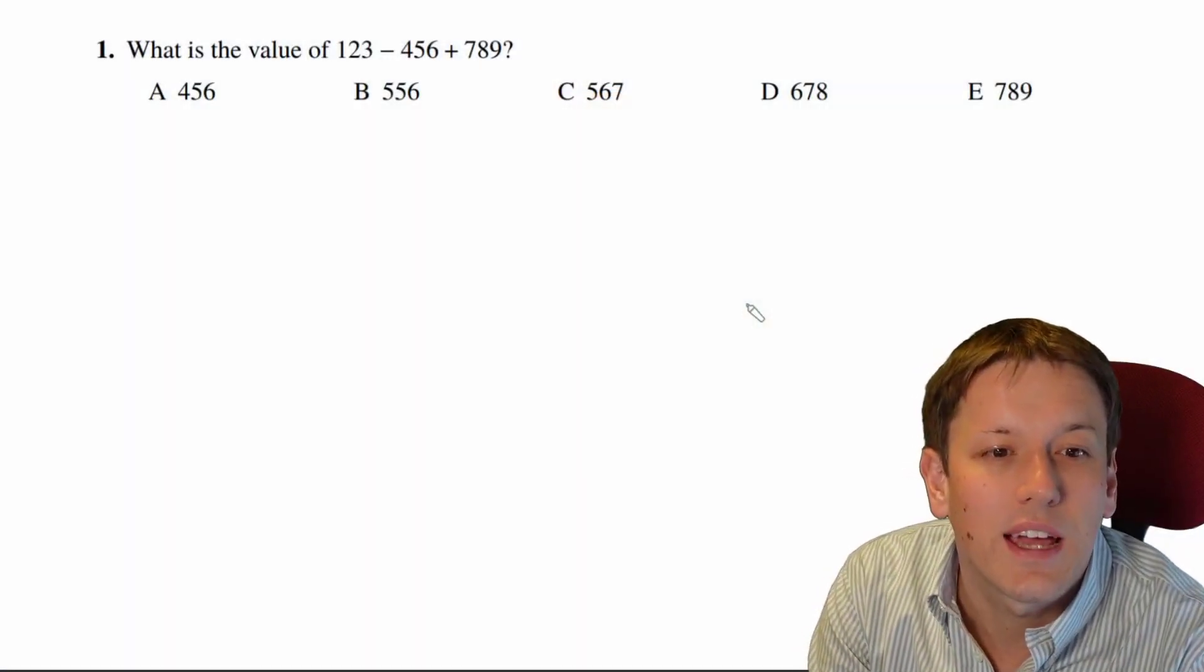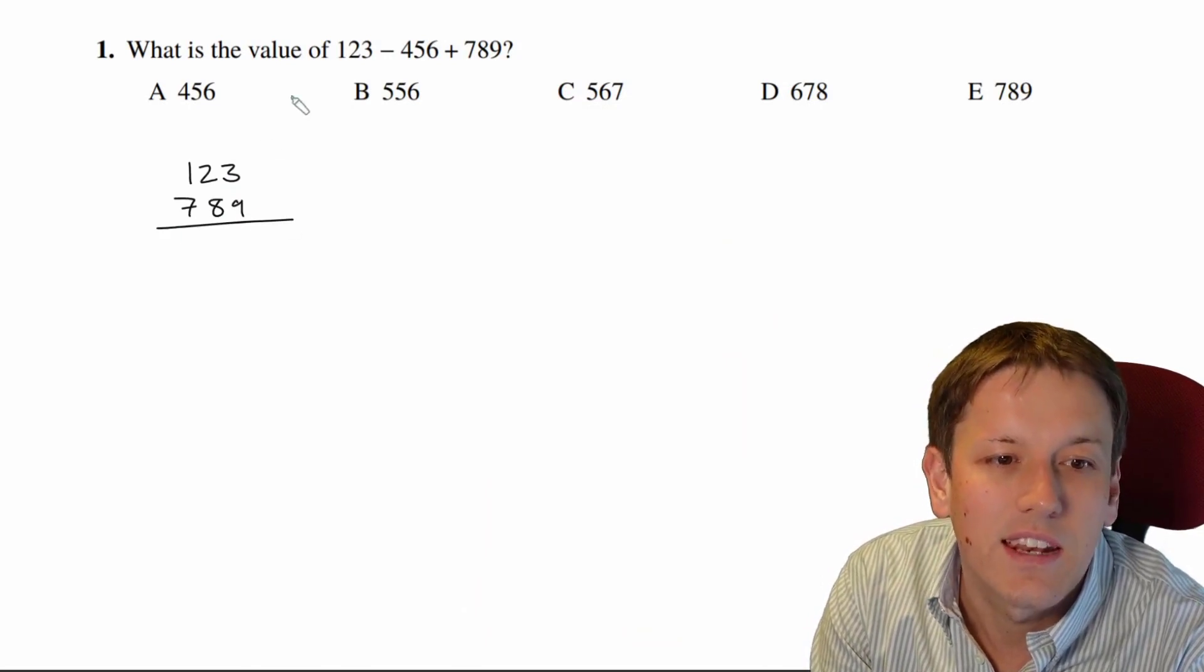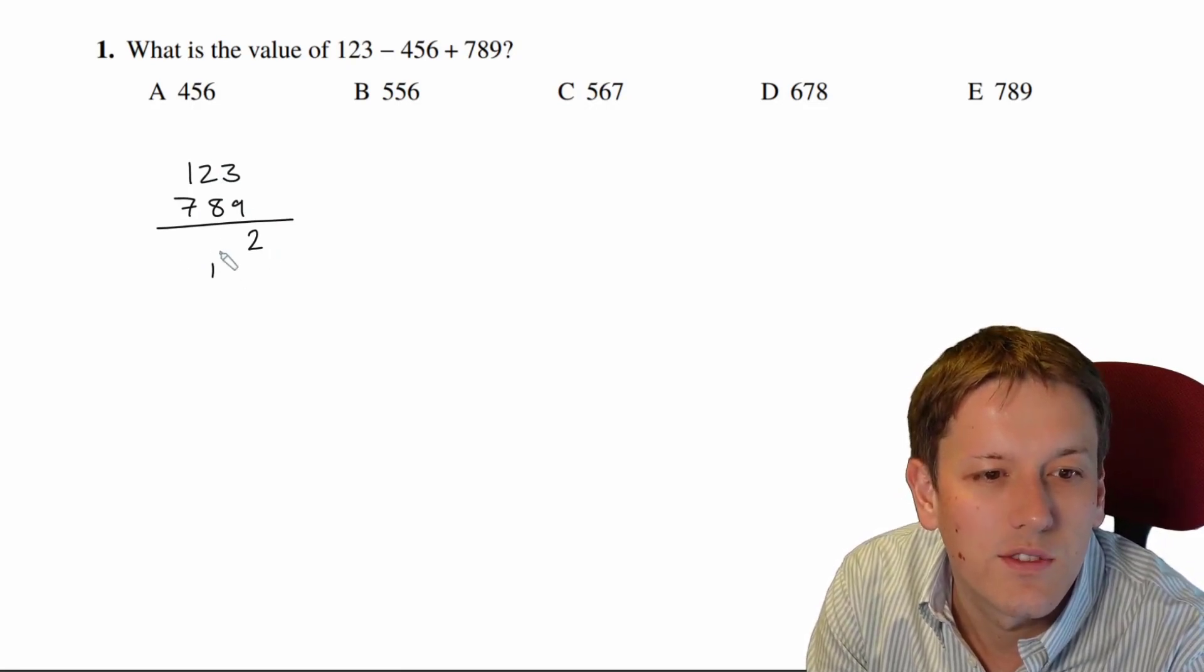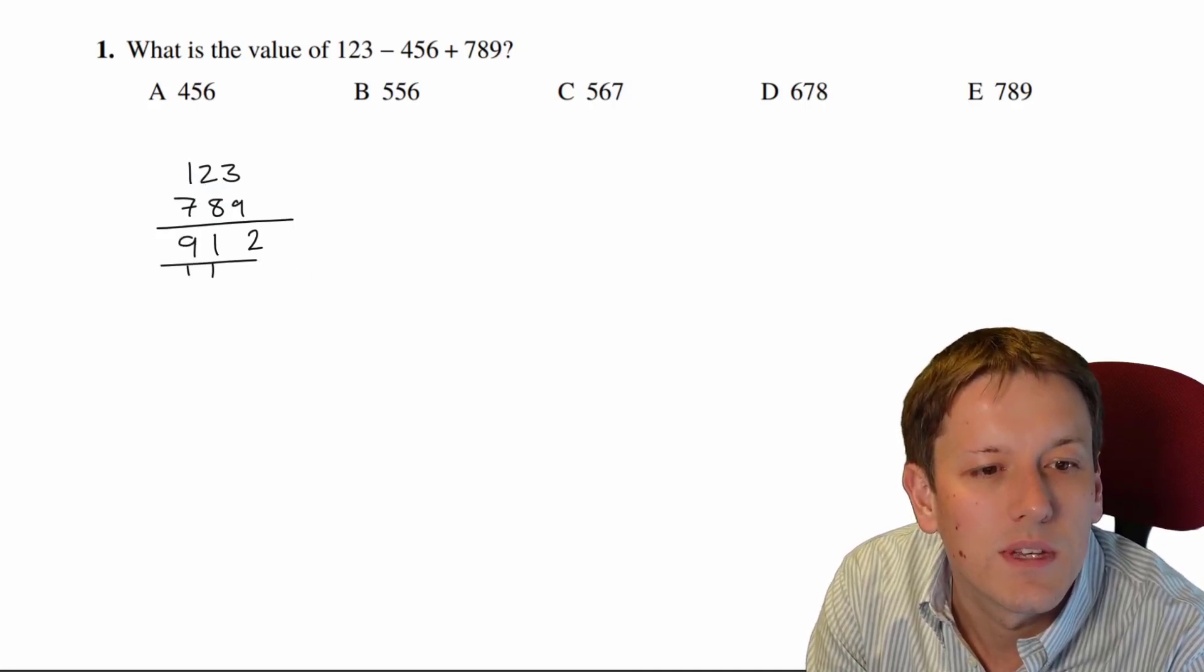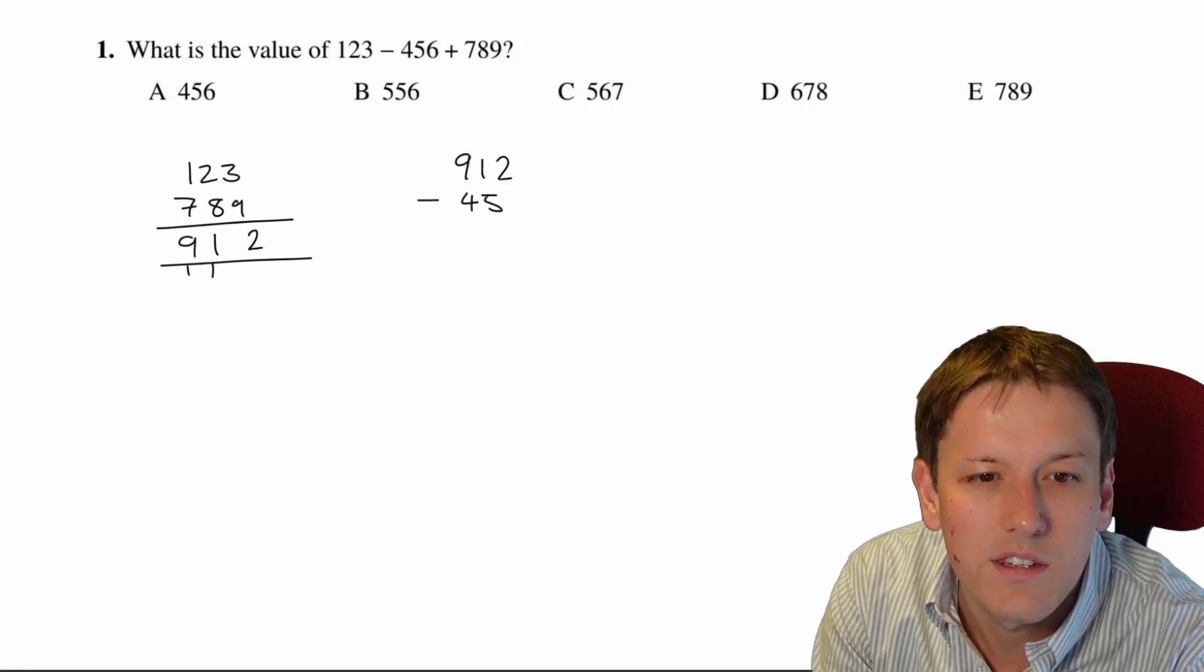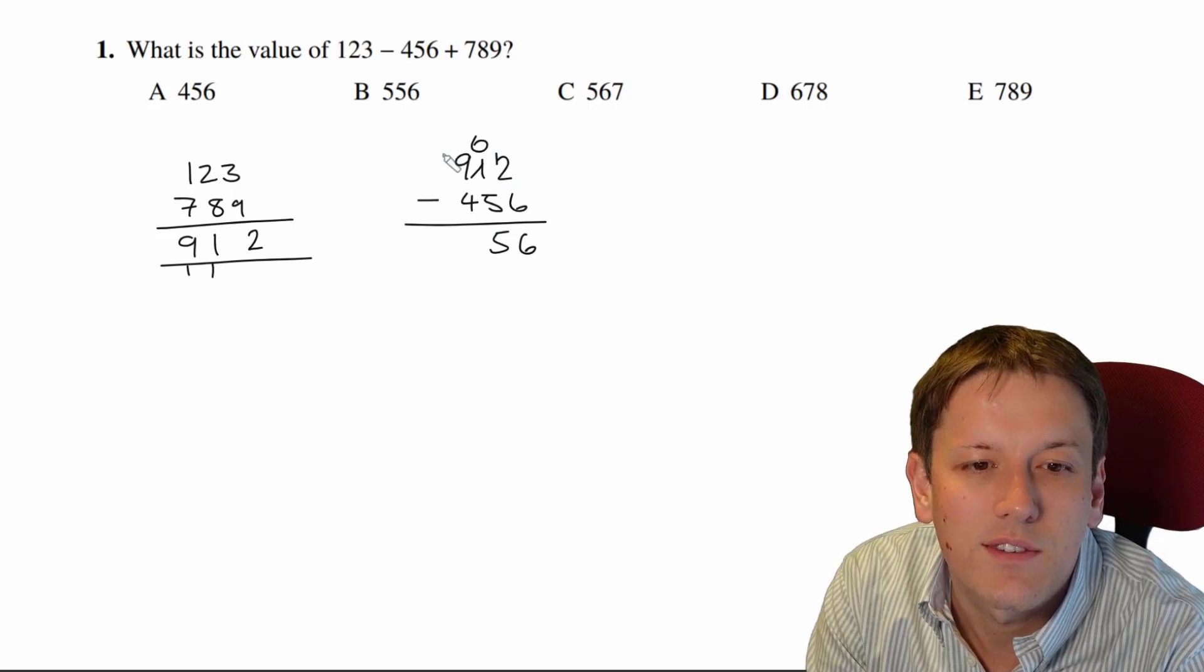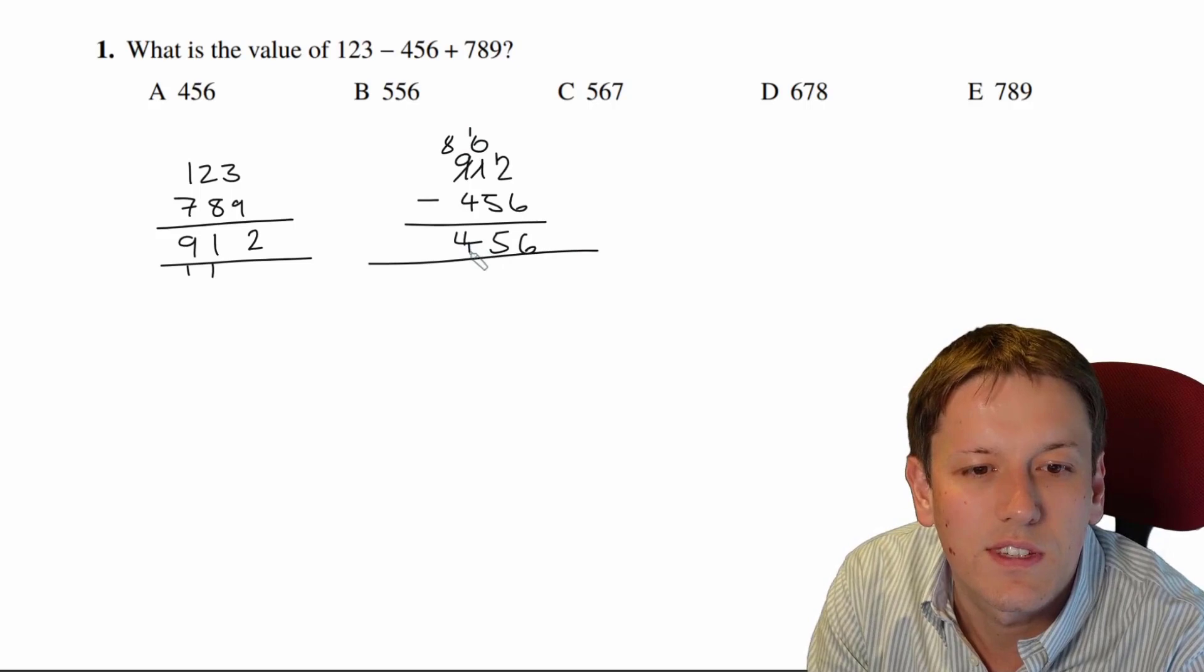So we're just going to work this one out. We've got 123, and I'm going to add that to 789. Do this by whatever method you want. Here, I'll just do an ordinary column addition. 3 plus 9 is 12, and then 2 plus 8 plus 1 gives me 11, and then 1 plus 7 plus the 1 gives me 9. So I've got 912, and then 912 minus 456. So I've got 12 minus 6 is 6, and then I'm going to have to have a 5 here and carry 1 from the 9, and I get 456.